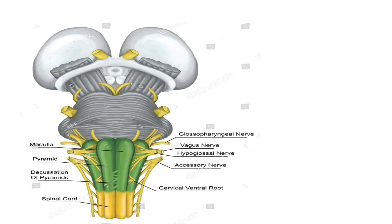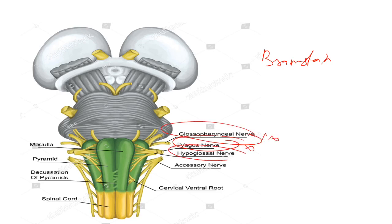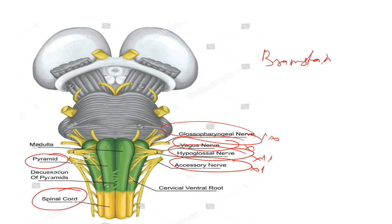Now, see this diagram — it is the same brainstem. Here you can see the glossopharyngeal nerve, which is the ninth nerve; this is the tenth nerve; this is the twelfth nerve; and this is the eleventh nerve. This is the pyramid, and this is the spinal cord.